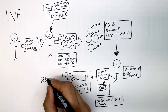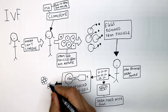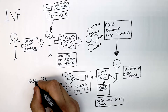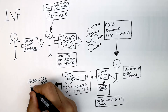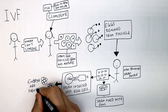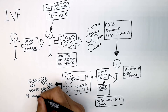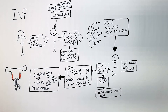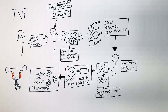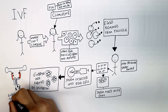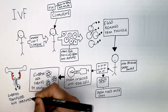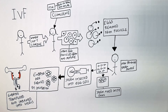Now the egg has been fertilized by the sperm. Embryos are then formed by incubation. When the embryos are ready, they are implanted into the uterus of the mother.